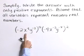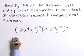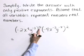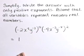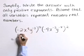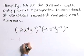Now let's start with this first piece. Any non-zero value raised to the zero exponent has a value of one. So this whole first large factor takes on a value of one.